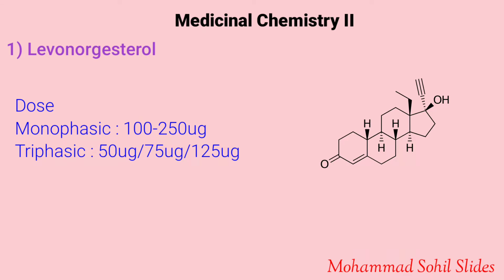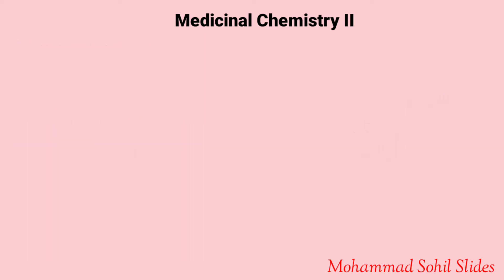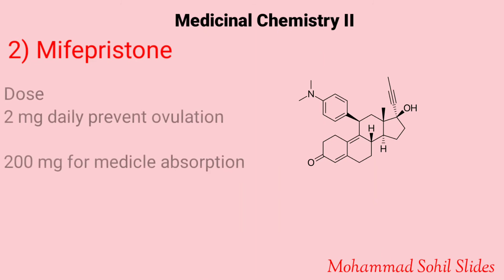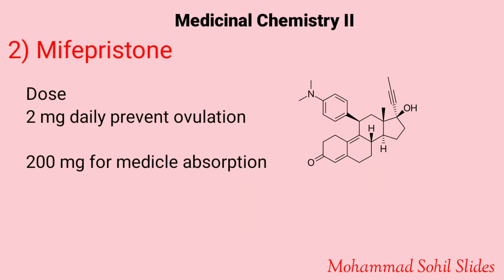Side effects of levonorgestrel include nausea, breast tenderness, headache, and increased, decreased, or irregular menstrual bleeding. The dose is 100 to 250 mcg for monophasic and 50 to 125 mcg for triphasic formulations. The second drug is mifepristone, which is typically used in combination with misoprostol to bring about an abortion during pregnancy. This combination is 97% effective during the first 63 days of pregnancy and is also effective in the second trimester.